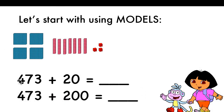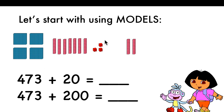One more time. When you're adding 20, you add 2 blocks of 10. The hundreds digit stays the same — 400 will stay the same. 7 will be more, because 7 plus 2 equals 9, and the ones digit will stay the same. The answer will be 493.